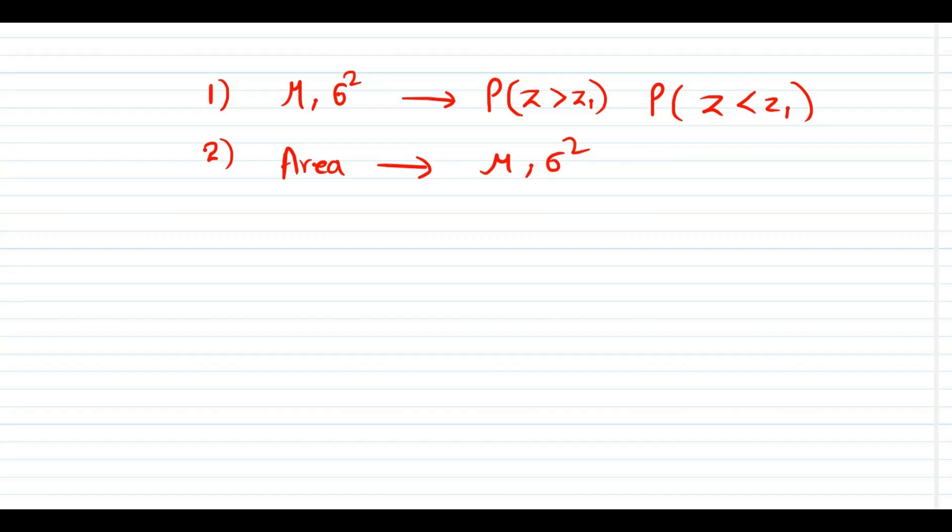This is our today's topic. Now listen, I have to find two different data - that is mu and sigma square, or sometimes people ask mu and sigma, that is mean and standard deviation. For this, area is not enough, so in my problem two data will be given.